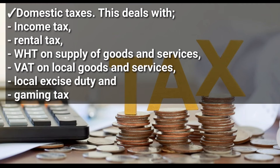Those are the two broad categories of taxes for tax administration purposes: the international taxes and the domestic taxes. To summarize, URA collects mainly two taxes — direct and indirect taxes — plus other non-tax revenues.